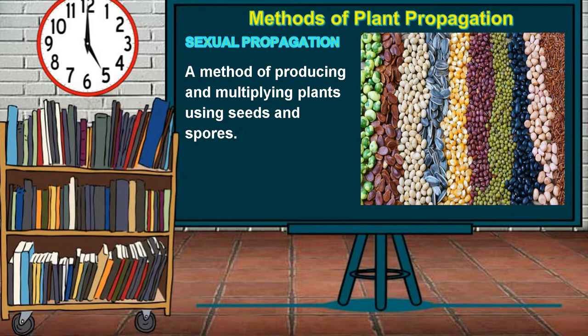Sexual propagation is the most common and economical method of propagating plants. Some fruit trees propagated with seeds are santol, tamarind, guava, mango, and jackfruit. However, some plants like fruit-bearing trees produced from seeds may not have the same characteristics as the mother plants.